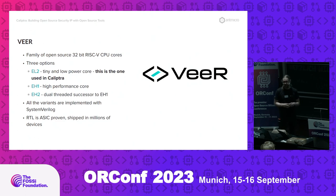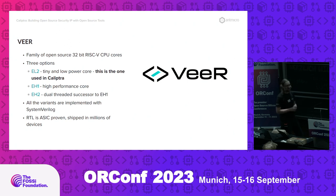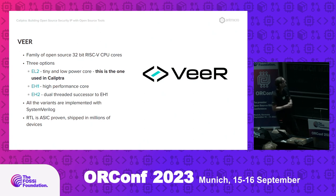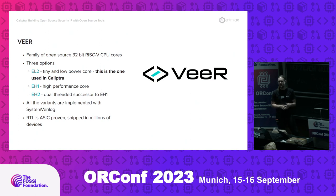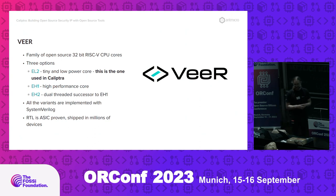VIR is a family of cores — formerly Swerve — with three open source variants called EL2, EH1, and EH2. EL2, the second-generation low-power variant, is the one being used by Calyptra. They're implemented in SystemVerilog and it is ASIC-proven IP. It has been shipped by Western Digital in millions of units of different devices, so it is definitely production-grade. We're trying to reuse it in yet another capacity, so we need to make sure it continues to work.